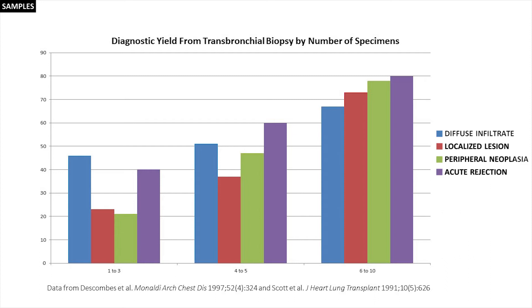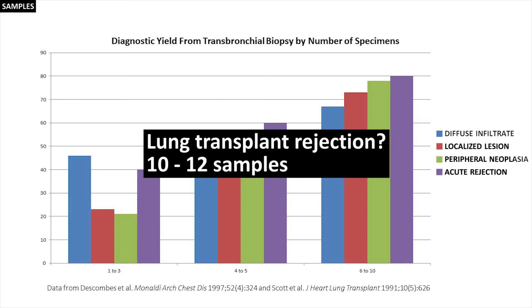When evaluating for lung transplant rejection, the recommendation is to take 10 to 12 samples in order to ensure that there are at least 5 good alveolar samples.